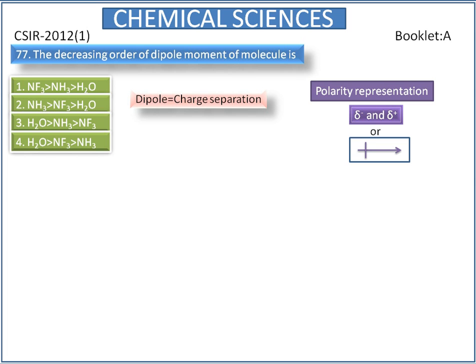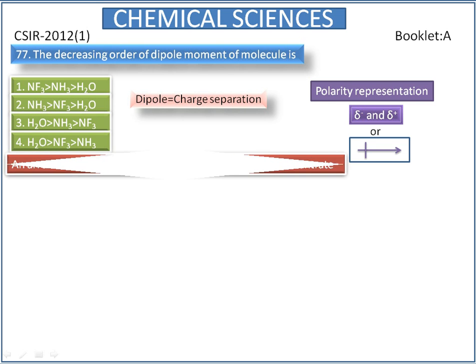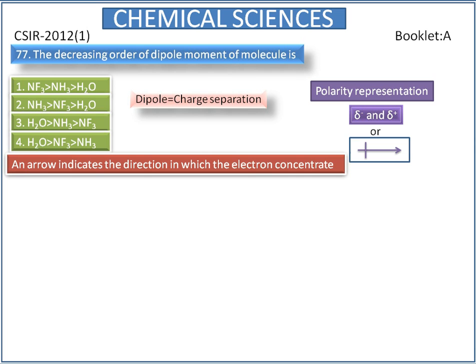The arrowhead of the symbol directs towards the more electronegative atom, and the plus symbol directs towards the positive atom. The arrow indicates the direction in which the electron concentrates. Dipole moment is defined as the product of the magnitude of the charge and the distance of separation between the charges. The molecular dipole moment is the vector sum of the individual dipole moments.